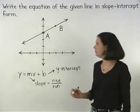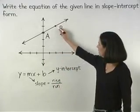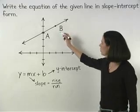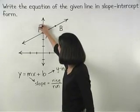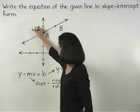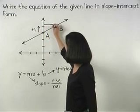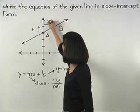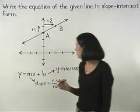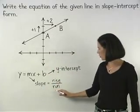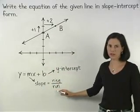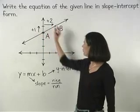And notice that to get from point A to point B along this line, we rise one unit and run two units. So our slope, or rise over run, is one over two.